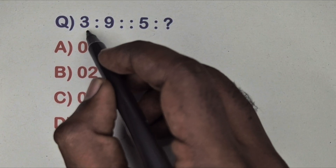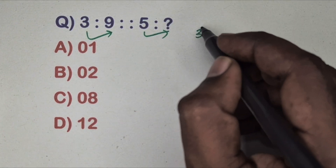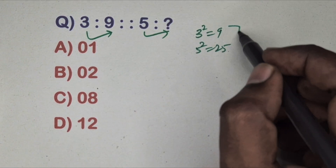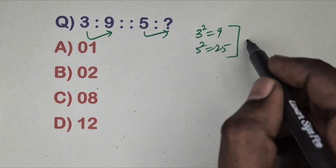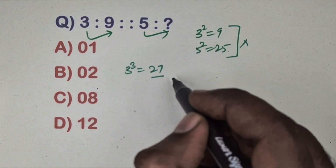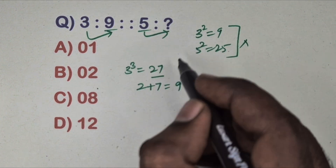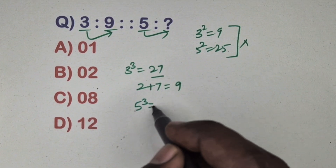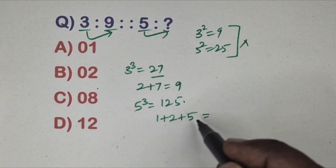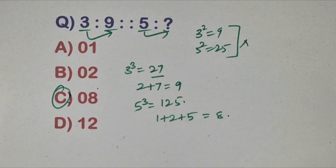Next question: three is related to nine, five is related to which number. Options are given. Three squared equals nine, five squared equals 25 — but 25 is not in the options, so wrong method. Correct method: this is cube and digit-addition relation. Three cubed equals 27, add digits: two plus seven equals nine. Same way five cubed equals 125, add digits: one plus two plus five equals eight. Option C is the correct answer.